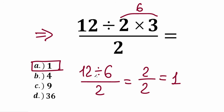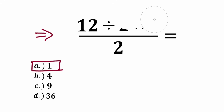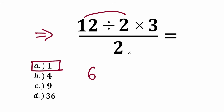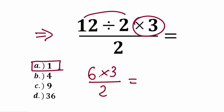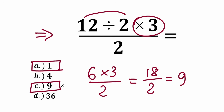So one part of students says the correct answer is A. Now let me show you the second approach. In the second approach: 12 divided by 2 equals 6. Next we have multiplication by 3 — so 6 times 3, and we divide all of this by 2. As a result, 6 times 3 equals 18, divided by 2 gives us 9. This is option C.